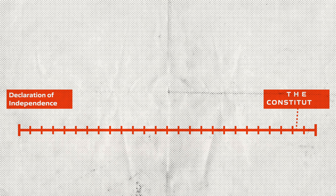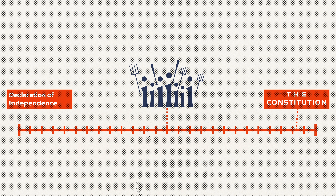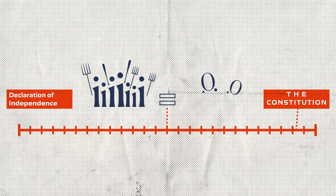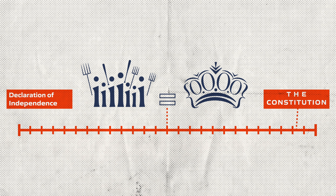The framers didn't want a system where the majority could do whatever it wants. They had some experience with this in the period between the Declaration of Independence and the Constitution, and it didn't turn out well. What they learned was that these kinds of majorities can be just as tyrannical as kings, aristocrats, and distant ministers — that the people themselves can be despotic. And so they wanted to restrain that.